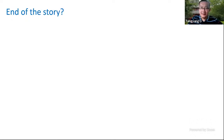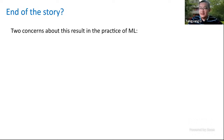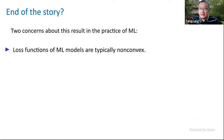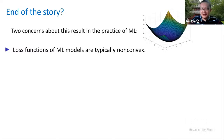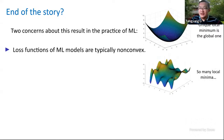We may ask whether this is the end of the story. Actually, there are much more things in optimization beyond convex optimization. From the perspective of machine learning, a lot of loss functions for machine learning models are typically non-convex. A convex function has a unique local minimum which is also global — but this is too ideal. What people actually encounter in real situations is a function with many local minima, and simply using a convex optimization algorithm is not going to work.